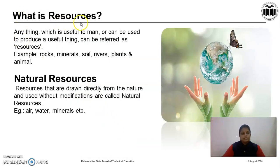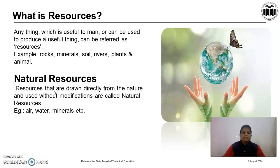First, we will see what is a resource. Anything which is useful to man or can be used to produce a useful thing can be referred to as a resource. For example, rocks, minerals, soil, rivers, plants and animals. Then, what are natural resources? Resources that are drawn directly from nature and used without any modifications are called natural resources. For example, air, water, minerals — all these things we get from nature and directly utilize.